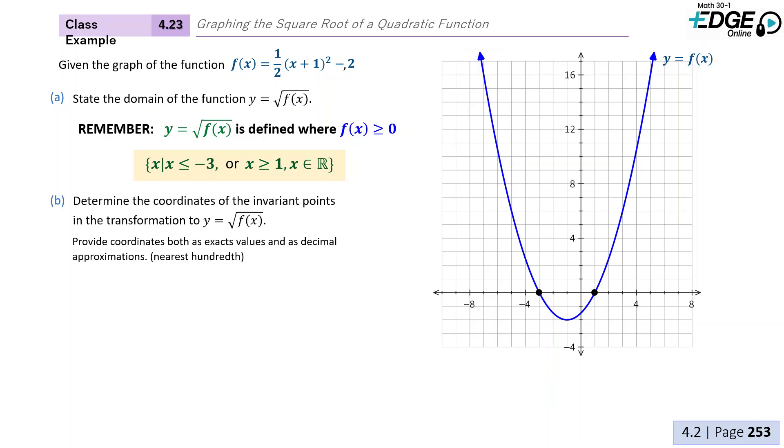Determine the coordinates of the invariant points in the transformation to y = √f(x). Provide coordinates both as exact values and as decimal approximations to the nearest hundredth. Remember, our invariant points occur when f(x) = 0 or f(x) = 1.